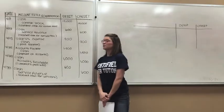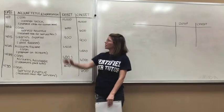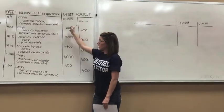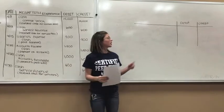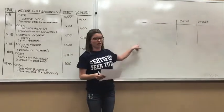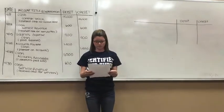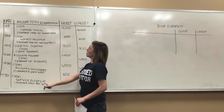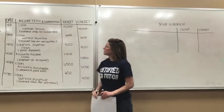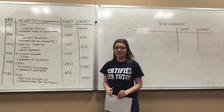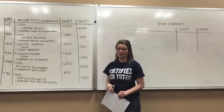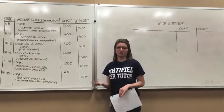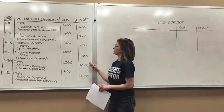Our next step is to prepare our trial balance. We do that by looking at each account that was either debited or credited, finding the total, and transferring it over to our trial balance. We're going to start with cash, which is used in every single entry. Since cash is an asset, it has a debit normal balance. We can think of our debits as positives and our credits as negatives.